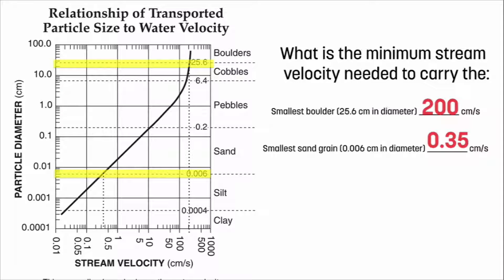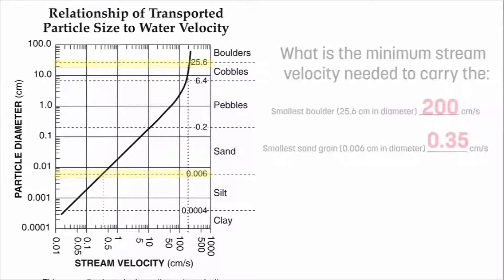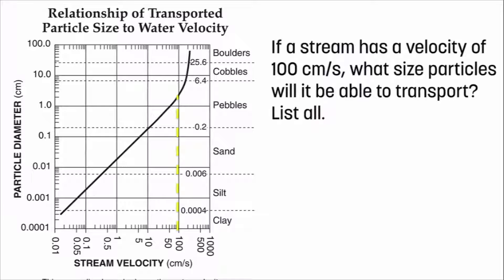Let's take a look at another example. In this case, we have a stream with a velocity of 100 centimeters per second. I used a dotted yellow line to point that out. What size particles will it be able to transport? List them all. So we know that we have a speed of 100 centimeters per second. What are the particles, what are the sediments being carried at that speed? Take a moment to answer that question.